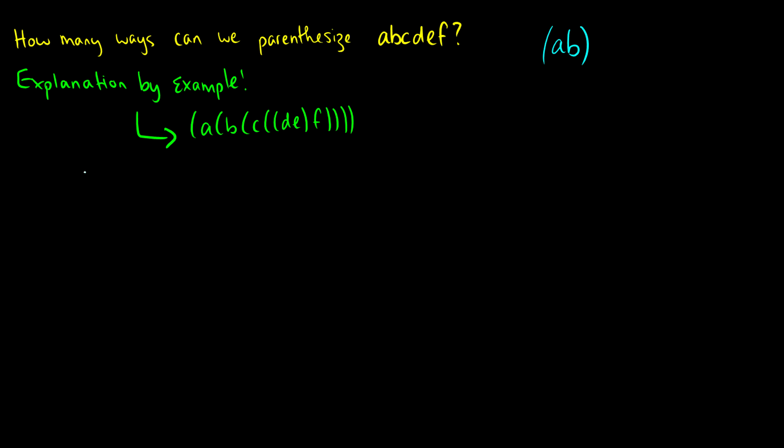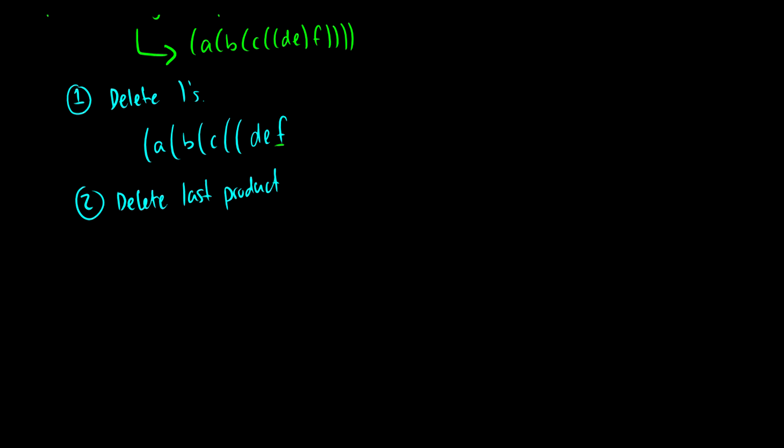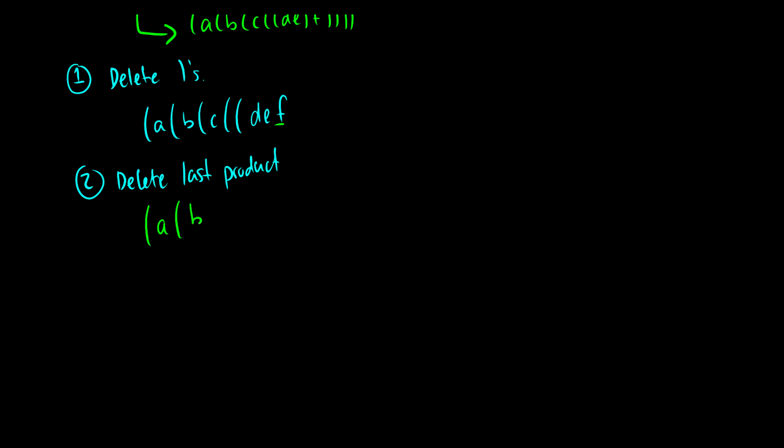Now I'm going to show you an example of how this relates to Catalan numbers. So we have a few steps that we have to do to take something that has already been done as a parenthesized product. So we have a fully parenthesized product here. It's parenthesized properly. So here's what we do. We're going to delete all of the right brackets. So now we're going to get left A, left B, left C, left left D, E, and then we have F. And our second step we're going to do is delete the last product. So in this case, we want to delete that F.